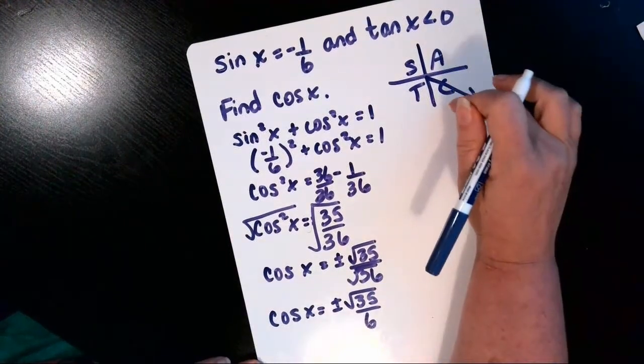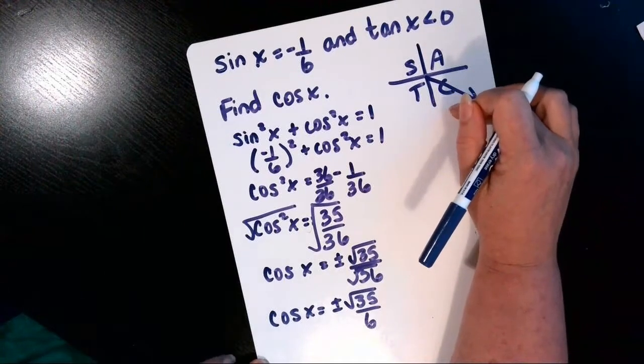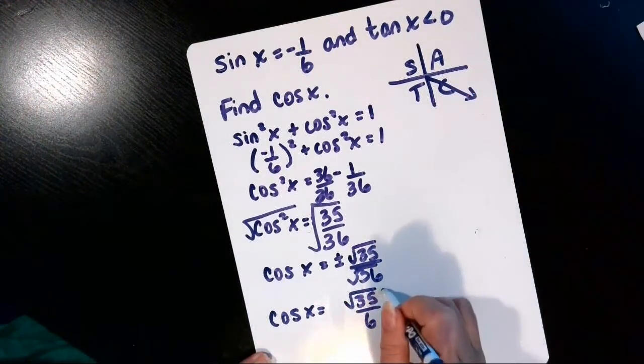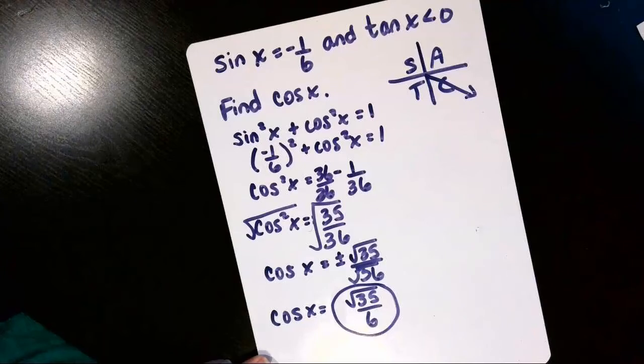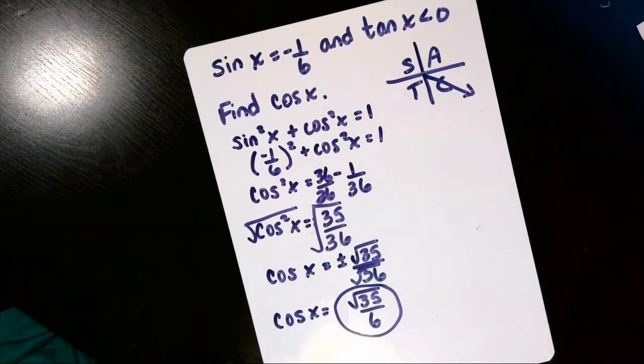So in quadrant four, cosine is positive. So we're going to throw out the negative answer, keep the positive, square root of 35 over 6, and that's it.